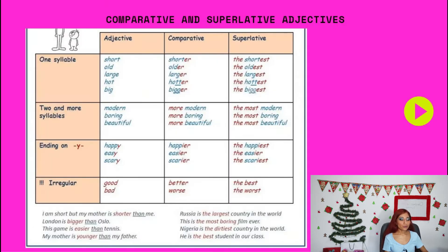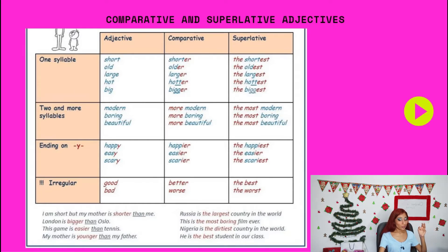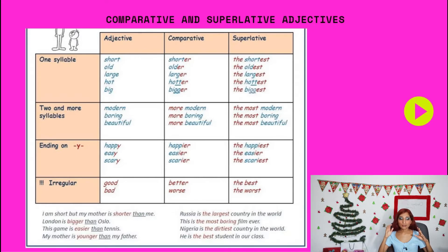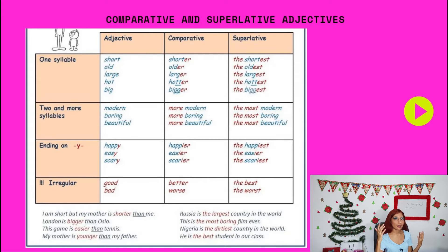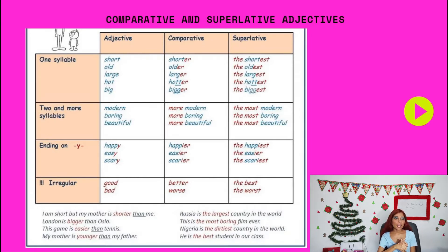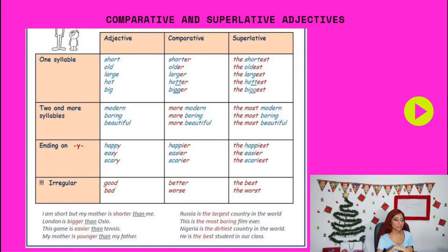Now we are going to learn and practice vocabulary. We have a lot to do today, so let's start right away. First of all, we are going to practice and refresh our memory about comparative and superlative adjectives. As you know, adjectives are used to describe people, places, objects, animals, etc. — you can use an adjective to describe everything. But you can also use comparative and superlative adjectives.